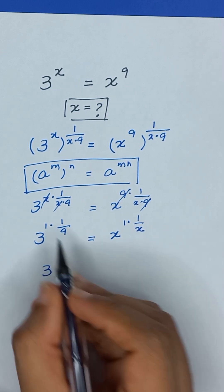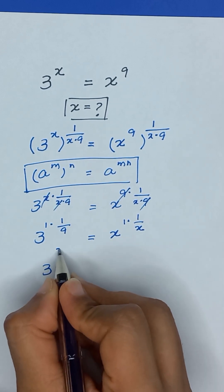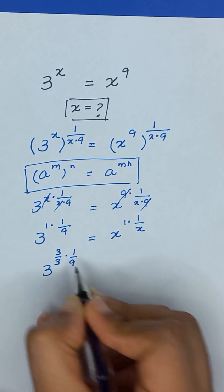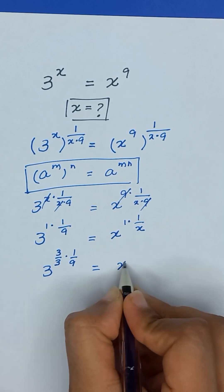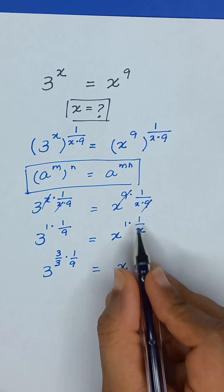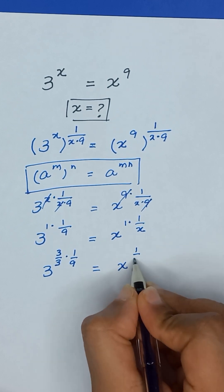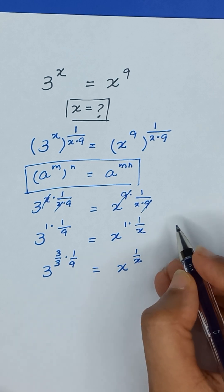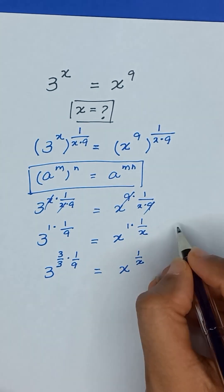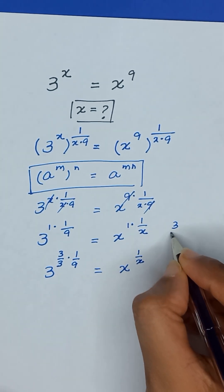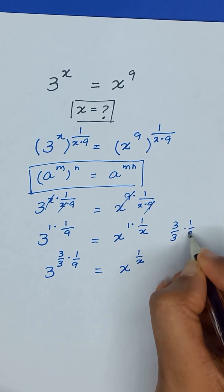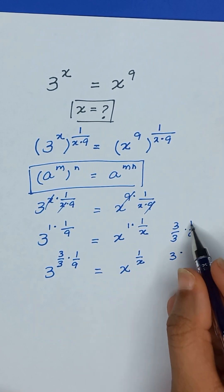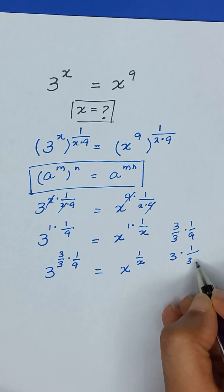Now we can write this 1 as 3 divided by 3, so the left side becomes 3 divided by 3 to the power 1 divided by 9, which equals x to the power 1 divided by x. This 3 divided by 3 to the power 1 divided by 9 can be written as 3 to the power 1 divided by (3 times 9).